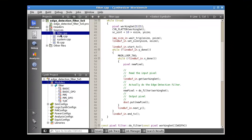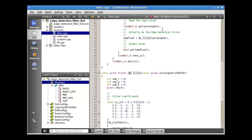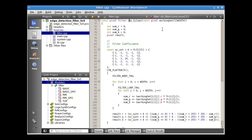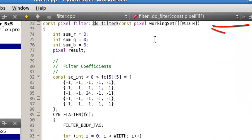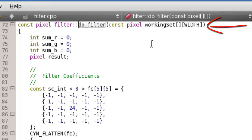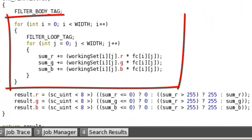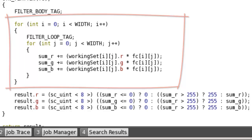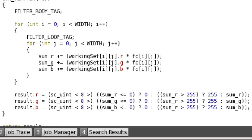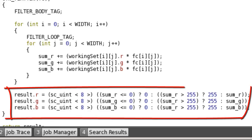Let's take a look at the actual filter function. This code is painfully simple. The function accepts an argument that is the working set. It then iterates over each pixel in the working set, multiplying it by the corresponding element in the coefficient table, and summing the individual color elements. Once all pixels are treated, it then clips the pixel values to be in the range 0 to 255 and returns the new pixel.